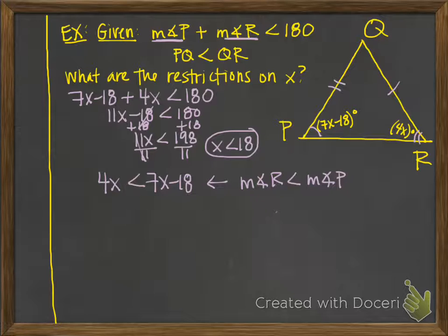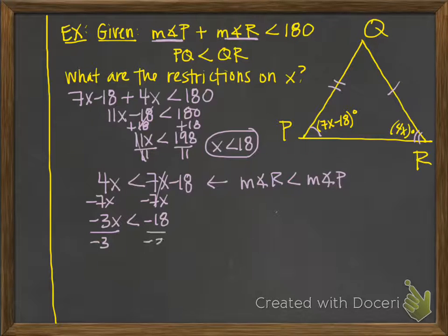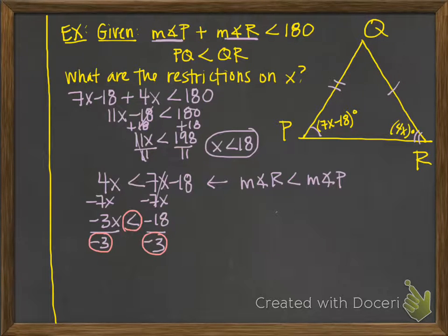For the second inequality, 4x < 7x − 18, move all x terms to one side: −3x < −18. Dividing both sides by −3 — pay close attention here: when you divide or multiply both sides of an inequality by a negative number, you must flip the inequality symbol. So we get x > 6.